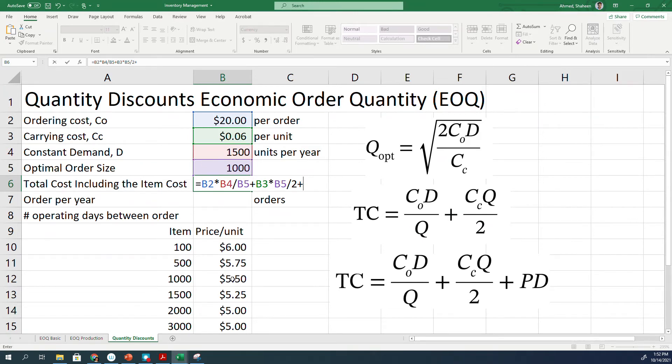In this case, we are ordering 1,000, so we are going to use this price times the demand, which is 1,500. So the cost now will be $8,310.